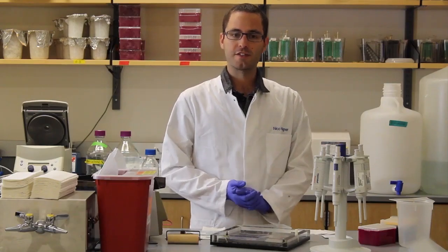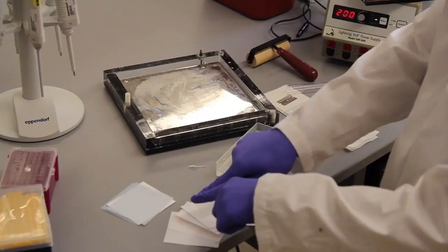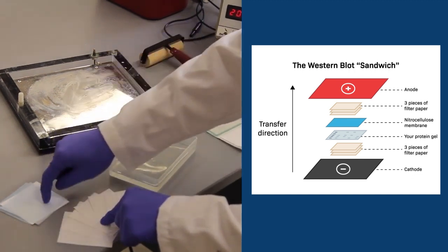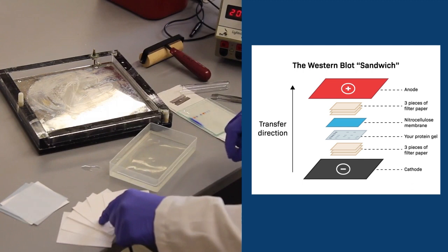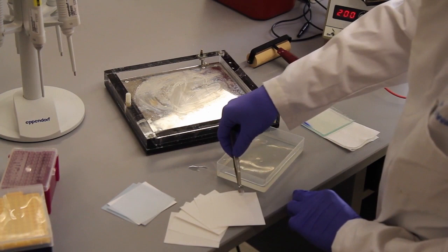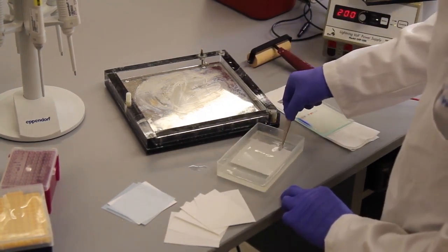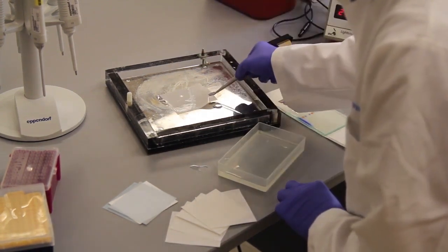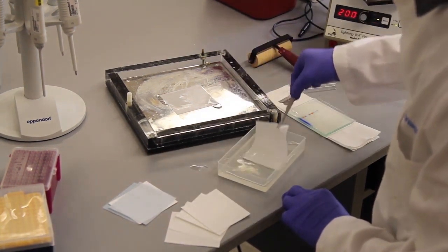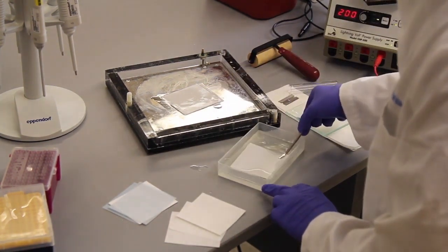To run a Western blot, the first step after running the protein gel is to assemble the Western sandwich. The Western sandwich consists of three sheets of Whatman paper, the gel, a nitrocellulose membrane, and three more pieces of Whatman paper assembled in this transfer chamber. An important thing is to not touch these with your fingers, so I'll use tweezers. I'm pre-soaking everything in transfer buffer first, and that just helps the transfer occur more smoothly later on. So second piece of Whatman paper, and the third piece of Whatman paper.